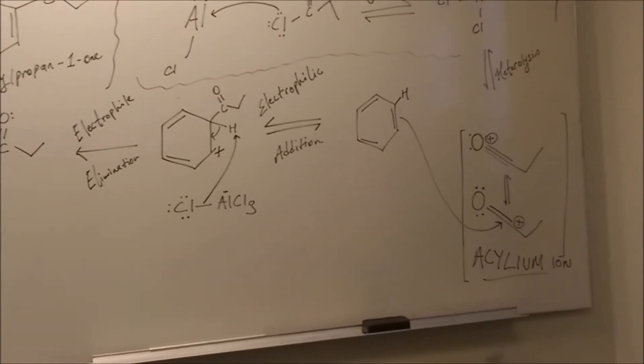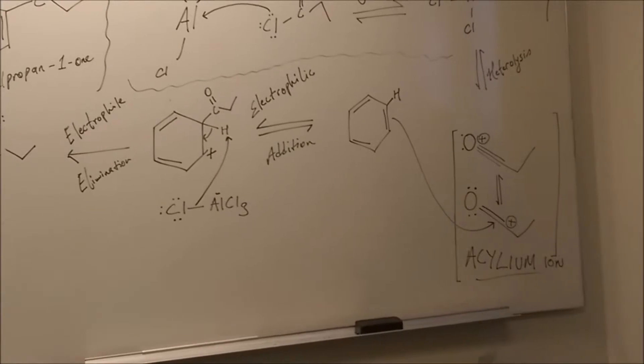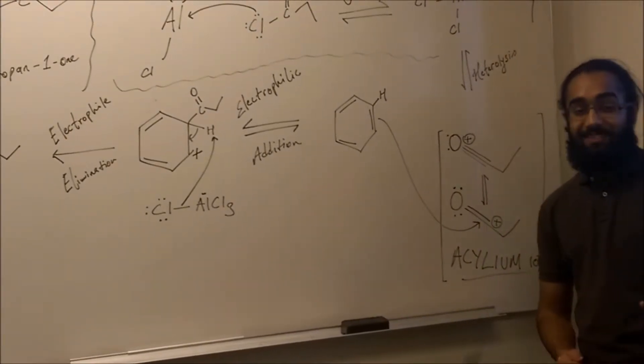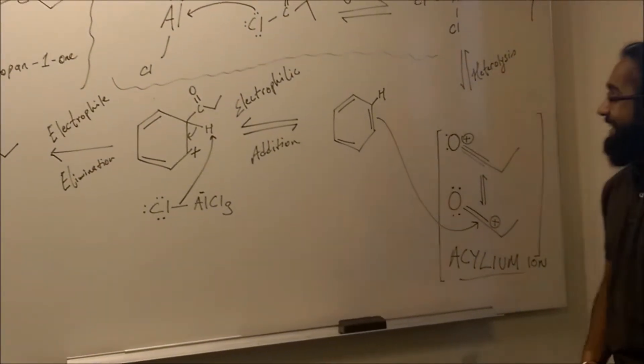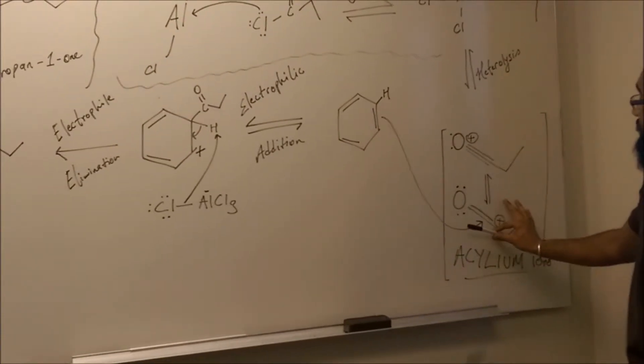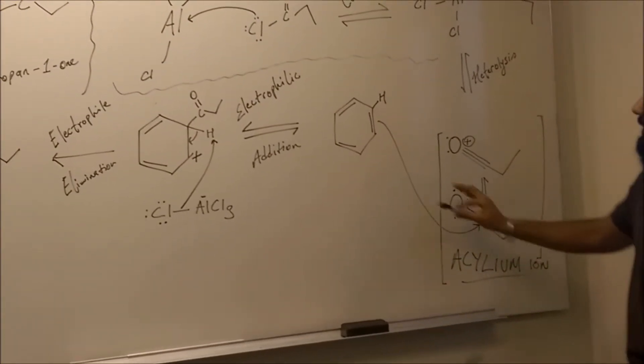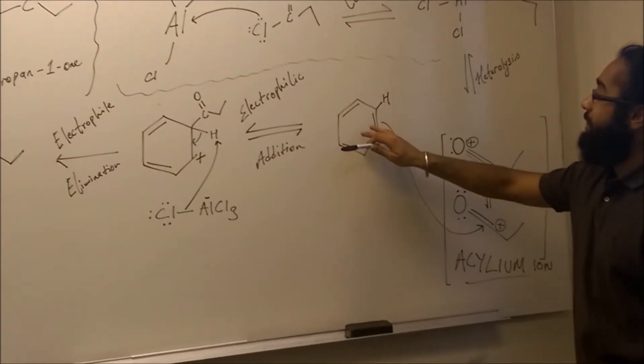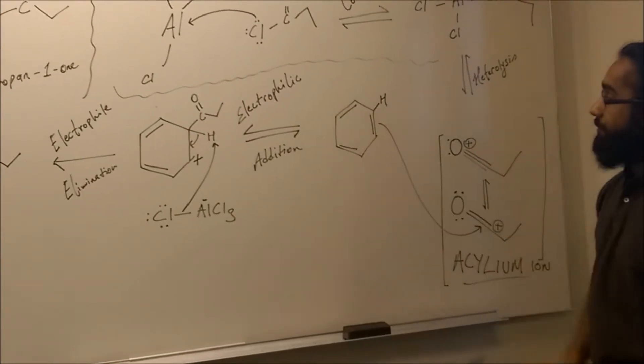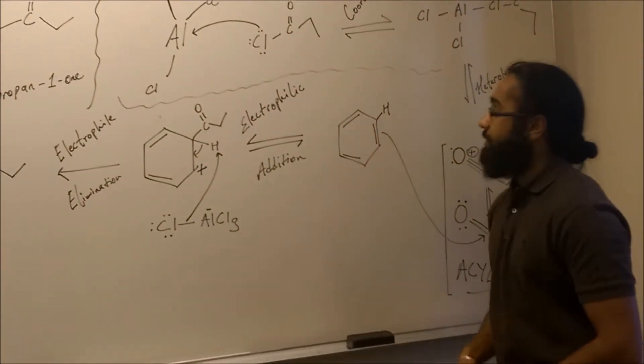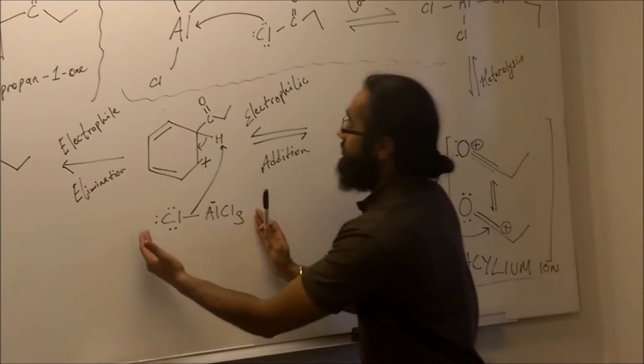The electrophile here is the acylium ion, which is highly positive and highly reactive. And so this electrophile being electron-loving is going to go to an electron-rich area, which is benzene, or vice versa. And then through electrophilic addition, we're going to be generating this species,